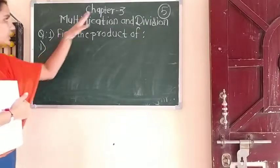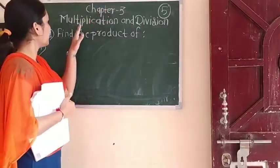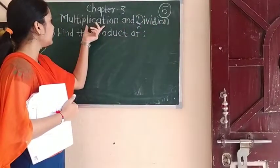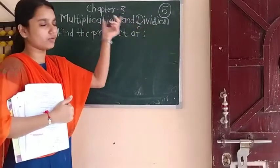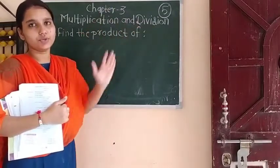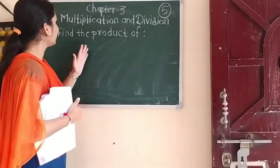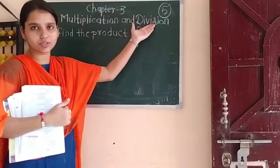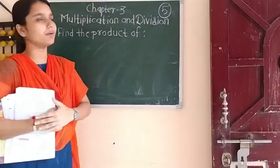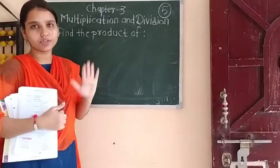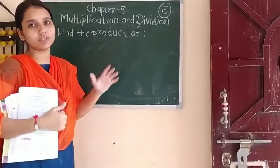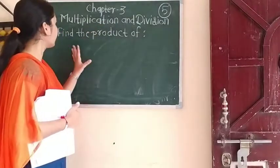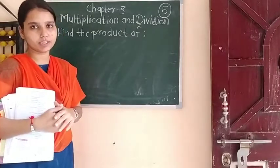Today we are going to start chapter number 3. The name of the chapter is Multiplication and Division. You have already studied multiplication and division in your previous classes — how to multiply, how to divide. You know this very well. Still, we are going to continue with this and see word problems related to multiplication and division. Before going to word problems, you should know how to multiply, so just for your revision we are going to see some examples related to multiplication first.